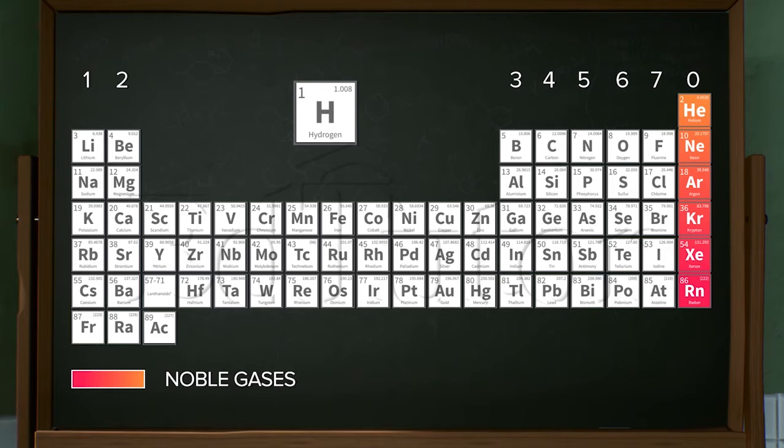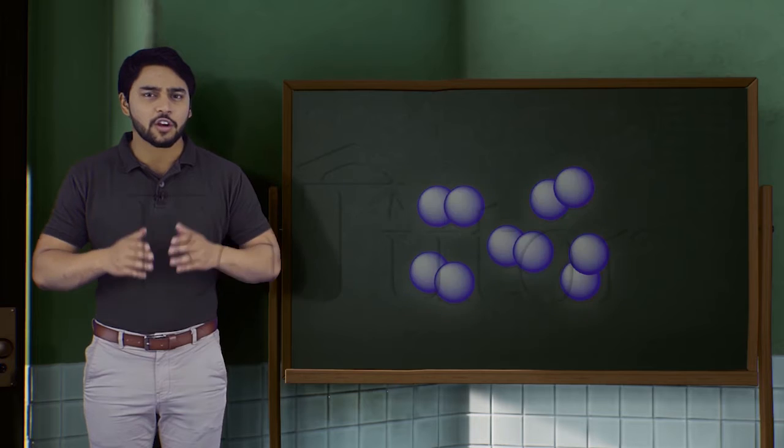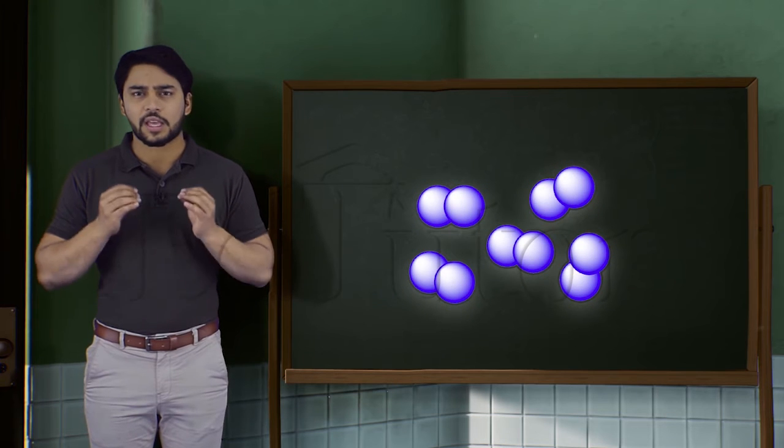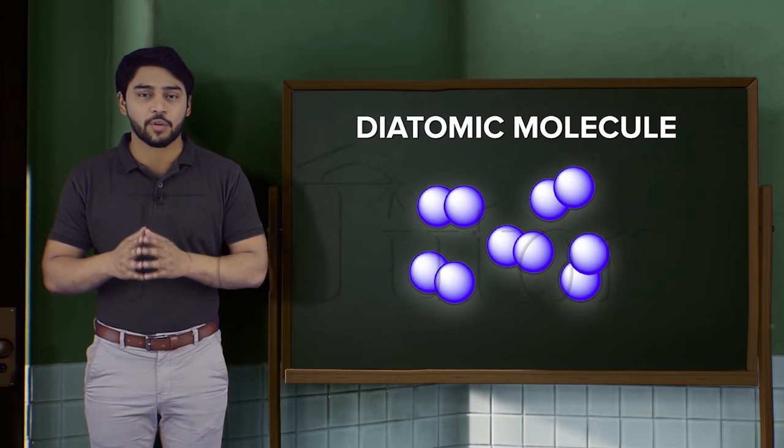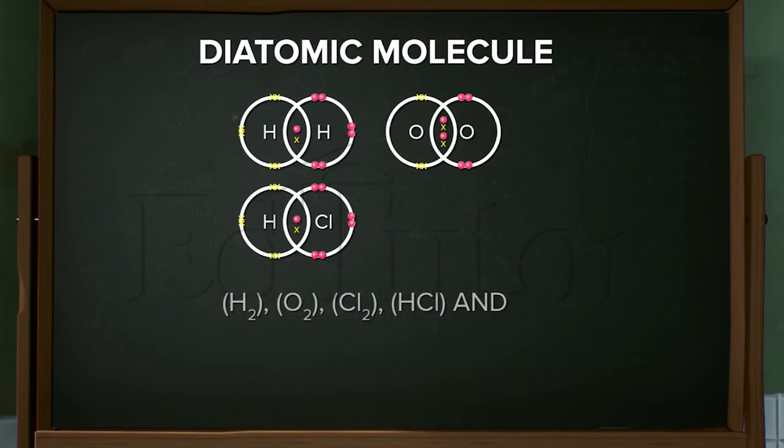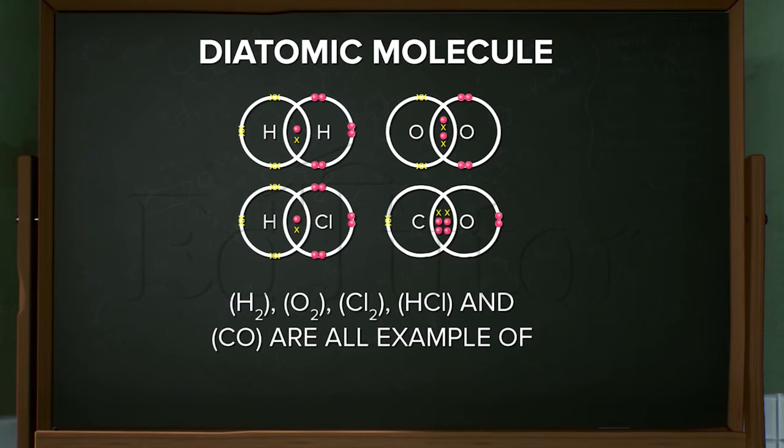Basically, the elements that are present in group 8 of the periodic table all exist as monatomic molecules. If there are two atoms in a molecule, then it is called a diatomic molecule.